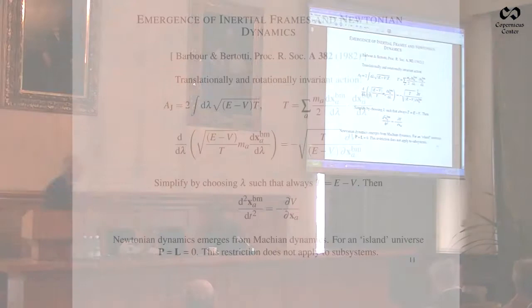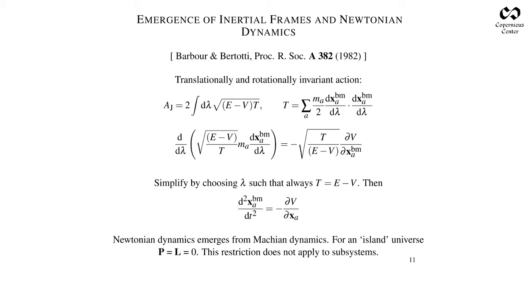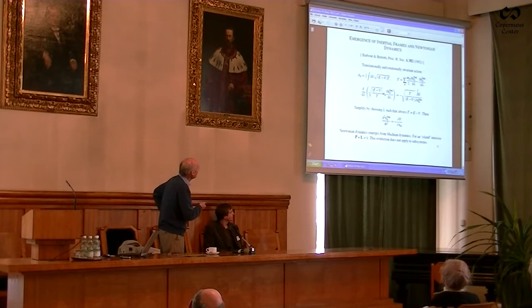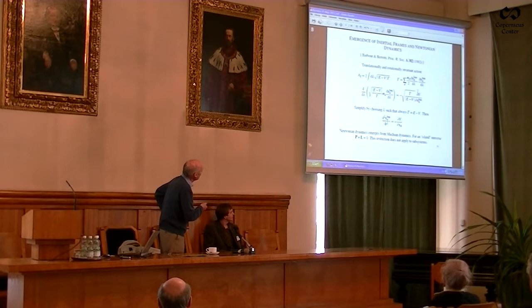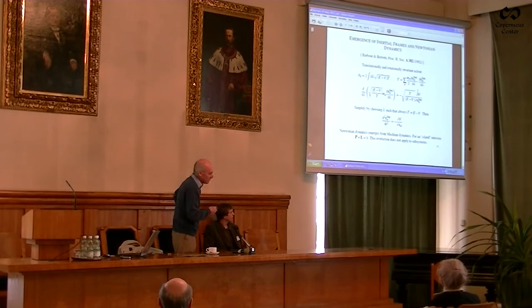Now let's look at how inertial frames of reference and time emerge from such a procedure. This is an action principle. It's got the square root. E is a constant which you can later identify with a Newtonian total energy—but I would much prefer it to be seen as just a constant that you can add to a potential. This can be the Newtonian gravitational potential. And T is a kinetic term—nearly the Newtonian kinetic energy, but it's divided by lambda, where lambda is a completely arbitrary parameter on the curve in shape space.